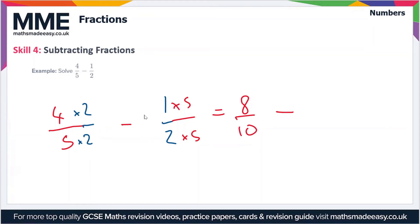Minus - let's look at the second fraction now - one times five is five and two times five is ten as well. So we've got our common denominator now: eight over ten minus five over ten. We just subtract the numerator, so we get eight minus five which is three over ten. So our final answer is three-tenths.